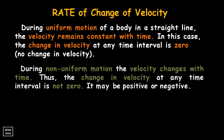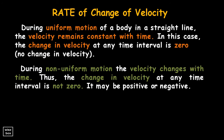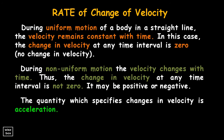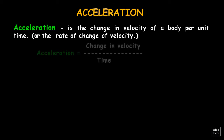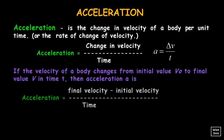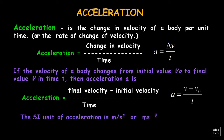During non-uniform motion, the velocity changes with time. Thus the change in velocity at any time interval is not zero — it may be positive or negative. The quantity which specifies changes in velocity is acceleration. Acceleration is the change in velocity of a body per unit time, or the rate of change of velocity. Thus, acceleration equals the difference between final velocity and initial velocity, divided by time. The unit is meters per second squared.